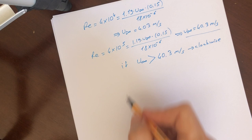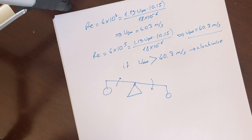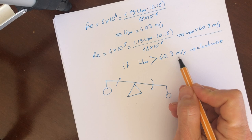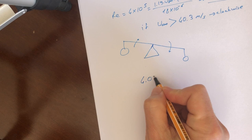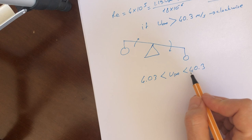How can we do this? We can do this like that. Balance arm is going to be like this if we choose the U infinity greater than 40.3. If we choose U values like this, namely 4.03 less than U infinity and then less than 40.3 meter per second, we can get the counterclockwise direction.